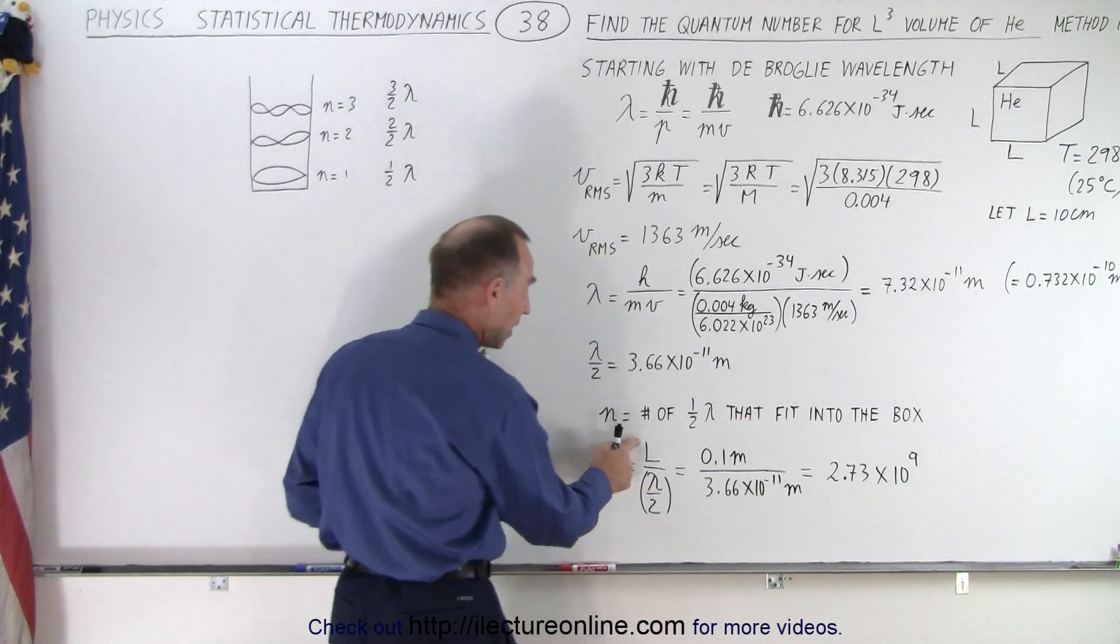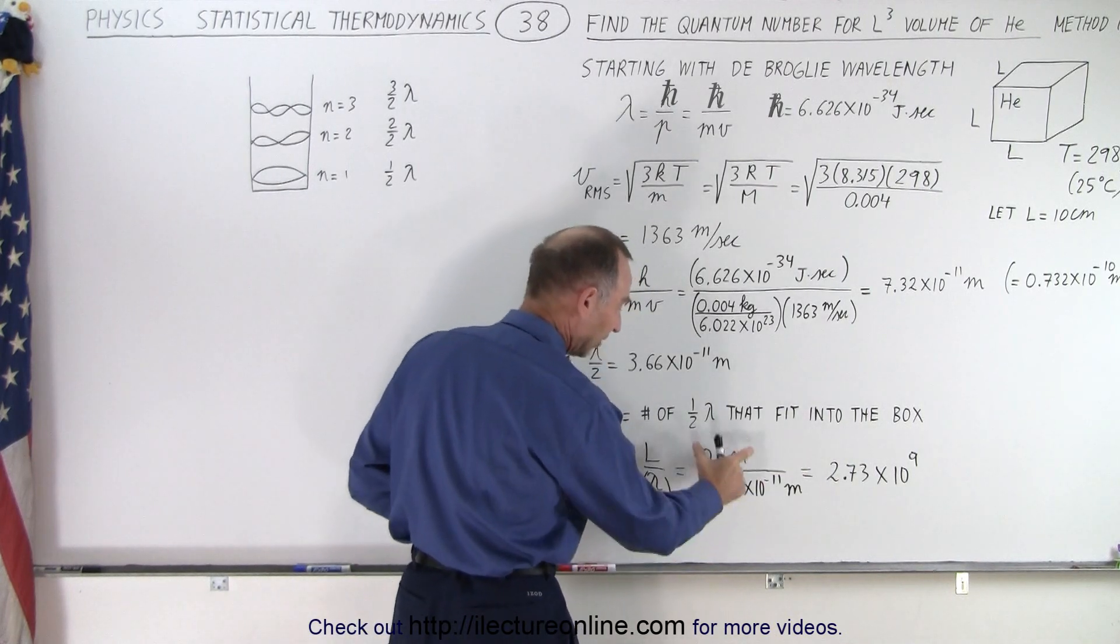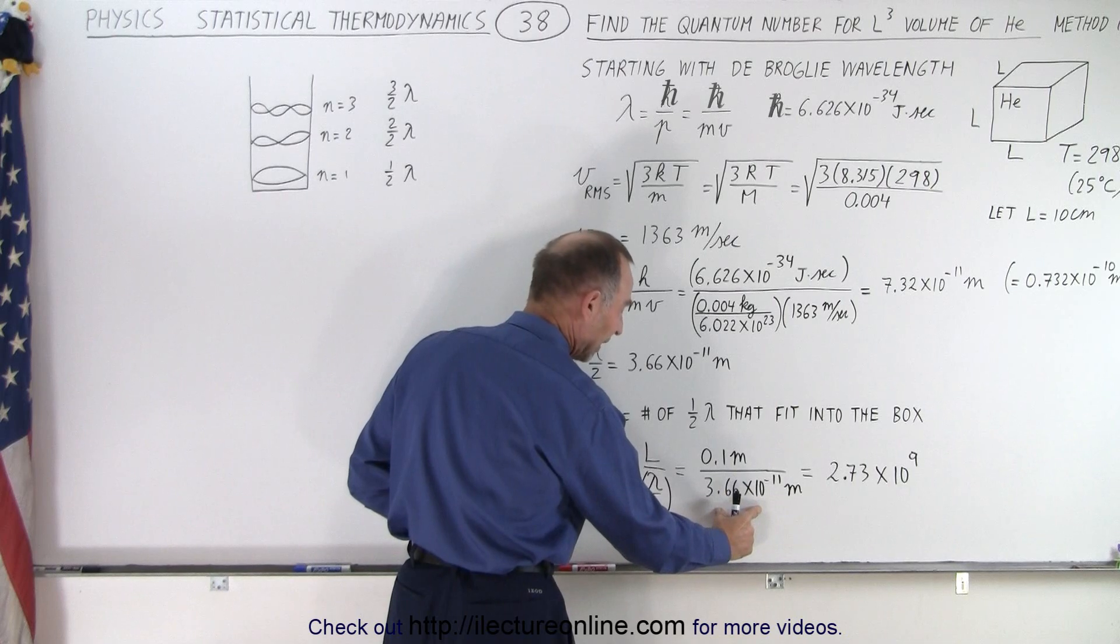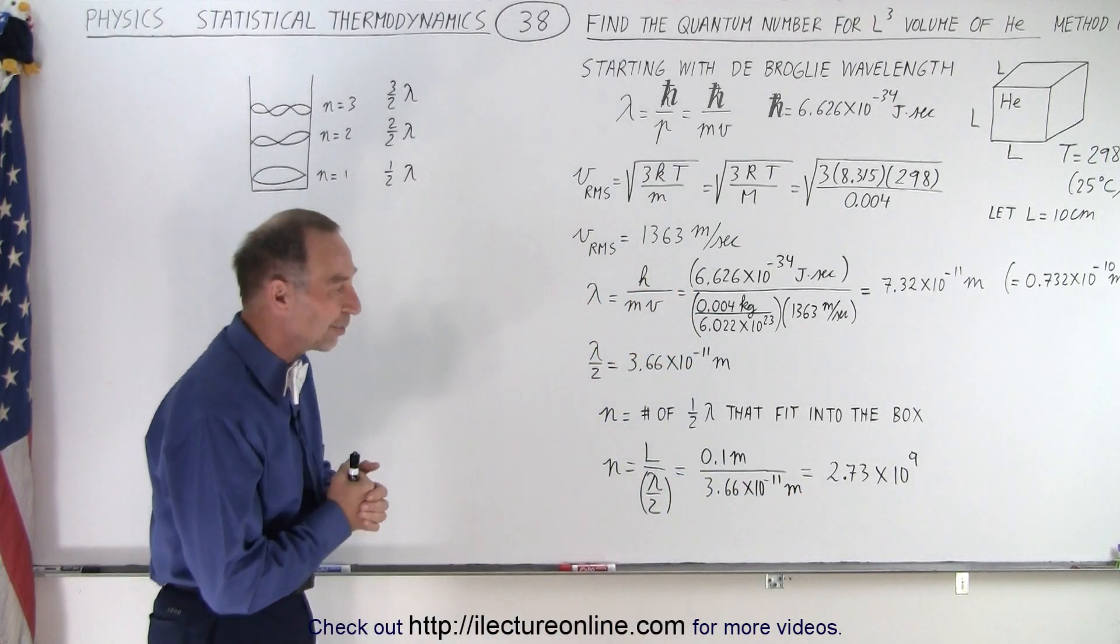So we take the length of the box, divided by the half wavelength, gives us the number times the half wavelength fits into the box, a tenth of a meter divided by half wavelength, and we get a quantum number of 2.73 times 10 to the ninth.